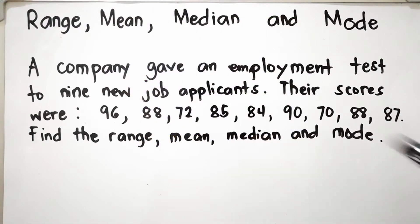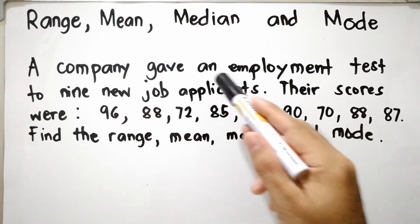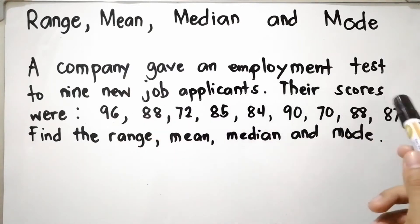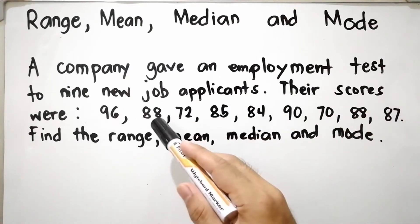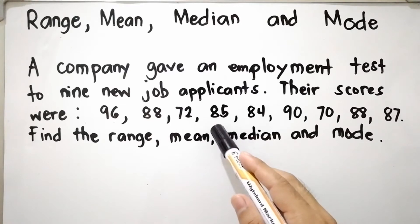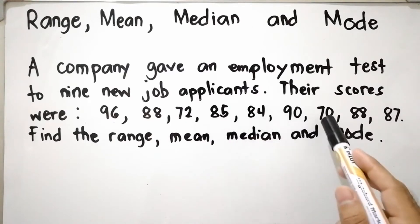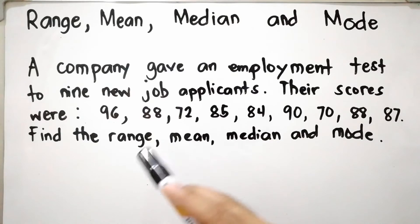So let us have an example. A company gave an employment test to nine new job applicants. Their scores were 96, 88, 72, 85, 84, 90, 70, 88, and 87. Find the range, mean, median, and mode.